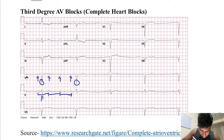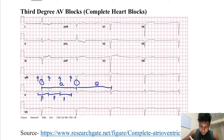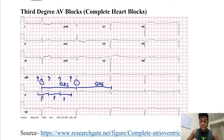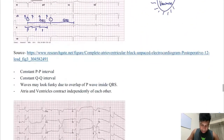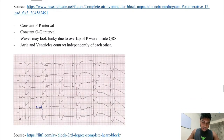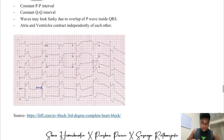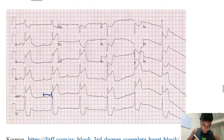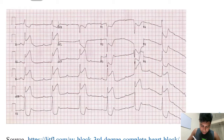The PP interval is constant and the QQ interval is constant, but the P waves and QRS complexes are clearly independent of each other. Sometimes the waves may look unusual because P waves can fall inside a QRS complex due to vector addition, producing an enlarged-looking wave on the ECG.